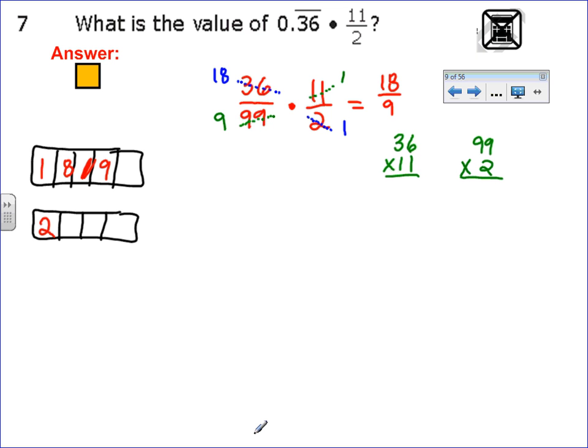If I multiply this out, 36 times 11 is 396, and 99 times 2 is 198. The problem is, you're not going to have that many boxes if you can grid. You're not going to have 396 slash 198. They're not going to give you that many boxes, so you would have had to reduce it.